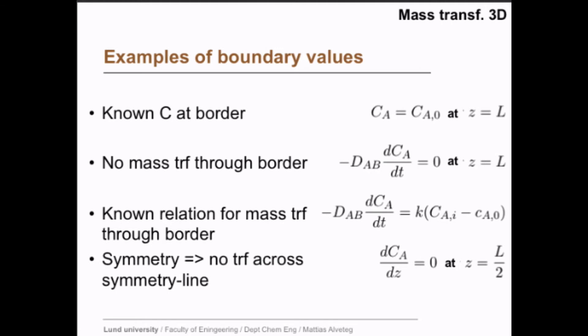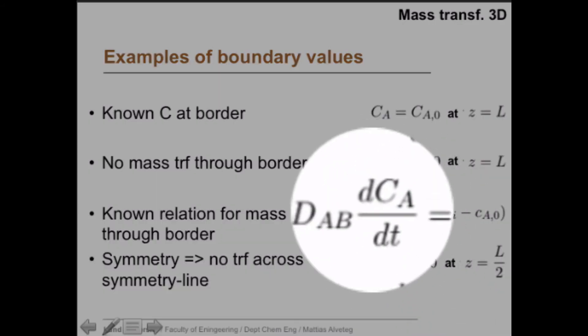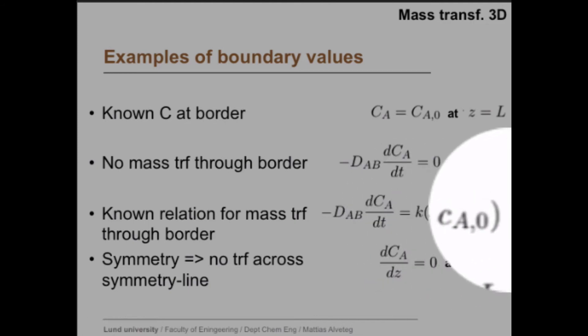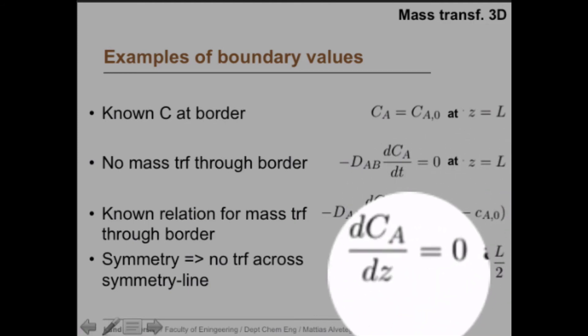We said boundary values are a clue to what kind of coordinate system that might be good to use. So what are boundary values? Well, one boundary value is that you know the concentration at the border, or that you know the mass transfer through the border. You can, for example, know that the mass transfer is zero. You may know the relation for mass transfer through the border. So this is the diffusive flux equals the mass transfer coefficient times the concentration difference.